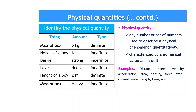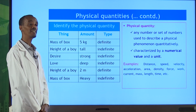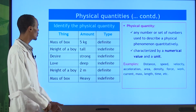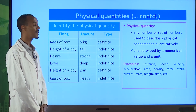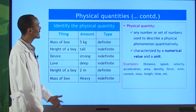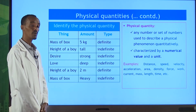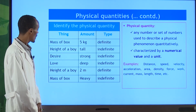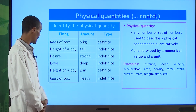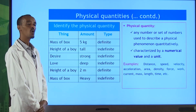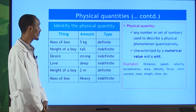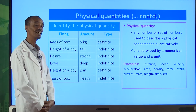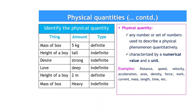If we take desire or a feeling, it can be described by saying a strong desire or strong feeling. But if you consider it as a physical quantity, the type is indefinite because we don't know how much a strong desire represents. Similarly, love — deep or shallow — is also indefinite because those words will not tell us something quantifiable in numbers.